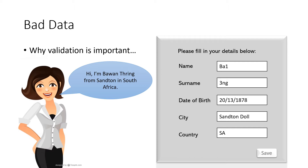Say we've got this lady called Dawan Thring from Santon in South Africa and she has to fill in a form. She puts in for her name 'BA1' and her surname '3NG' for Thring. Then her date of birth — she doesn't like telling people her age — so she puts the 20th of the 13th 1878. The city she puts 'Santon Dahl' and for her country she's lazy to type so she puts 'SA' and she clicks Save.